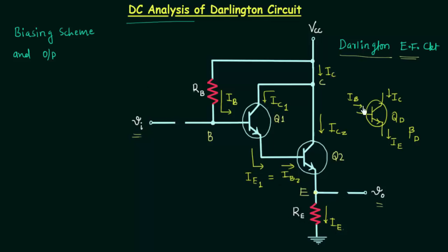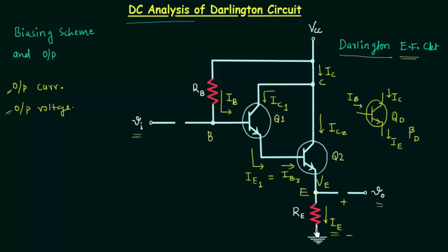The collector current IC is the collector current of the Darlington transistor. In DC analysis our prime aim is to find the output current and the output voltage. The output current is IE and the output voltage is VE. The output voltage is the potential difference across resistance RE, which equals VE — potential at this node minus potential at ground, which is 0 volts. So the output voltage equals VE, and we can easily calculate it once we have the output current.